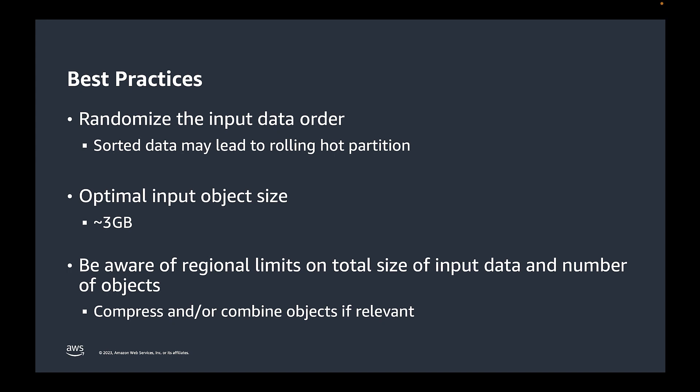Note that if the source data was generated by the export to S3 feature of DynamoDB, for example in order to copy a table to a different account, then the table is always exported from DynamoDB in a random fashion, so you don't need to worry about such a scenario. Data is imported concurrently by hundreds of executors in order to achieve high throughput, so with large quantities of data you should always divide the source data into multiple objects. The optimal object size for achieving maximum throughput is around 3 GB of uncompressed data. You should also keep in mind the regional limits for total size of data that can be imported in a single job and the total number of objects. If you are hitting these limits, you can compress the data or combine multiple objects into one.